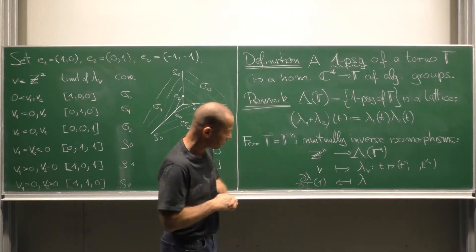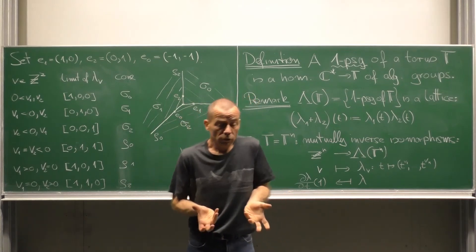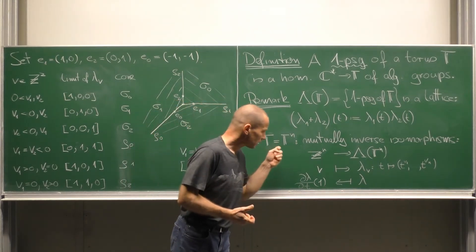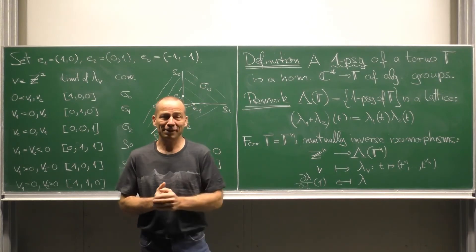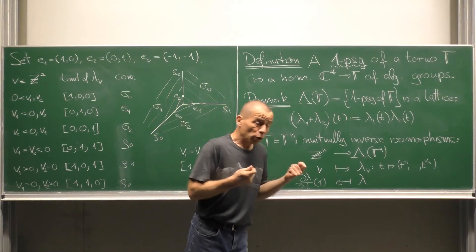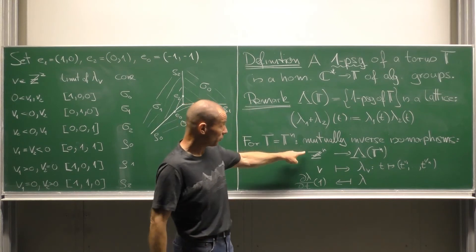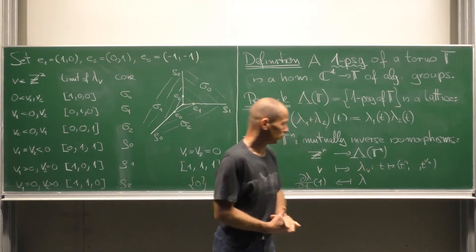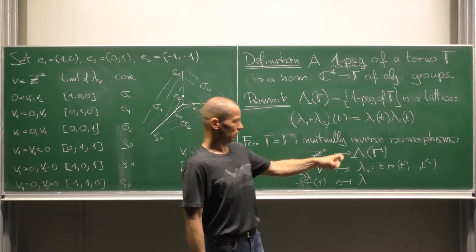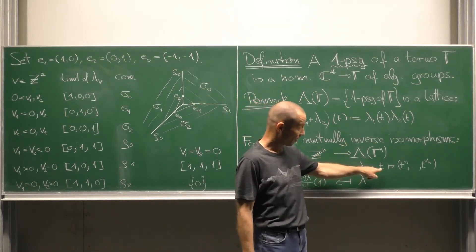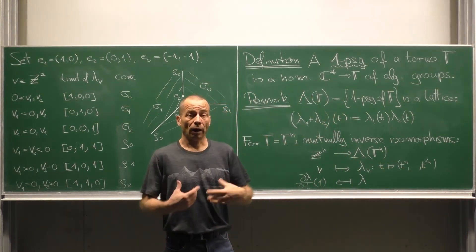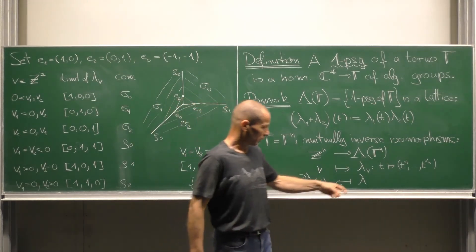In order to see that this is indeed a lattice structure, not just a group structure, remember that a torus is an algebraic group isomorphic to some standard torus. And in the case of the standard torus Tn we can perfectly say what happens. In this case we have isomorphisms being inverse to each other, namely from the lattice Zn to lambda of Tn, the one parameter subgroups of the standard torus, sending a vector v to the one parameter subgroup lambda v, which in turn sends T to T to the v1 up to T to the vn. And the inverse homomorphism just takes a given lambda, takes a derivative and evaluates it at the point 1.